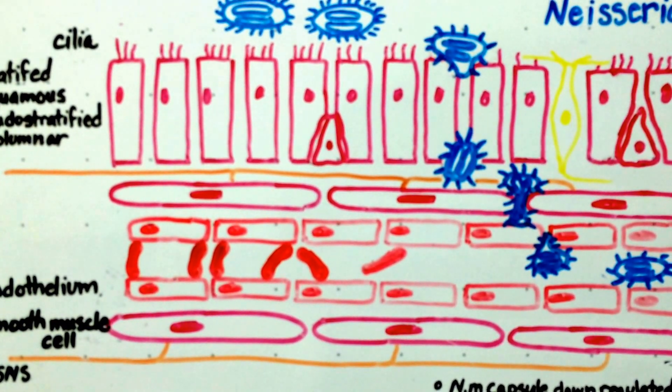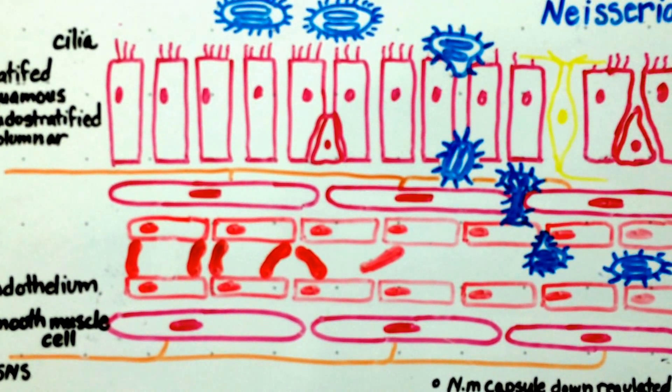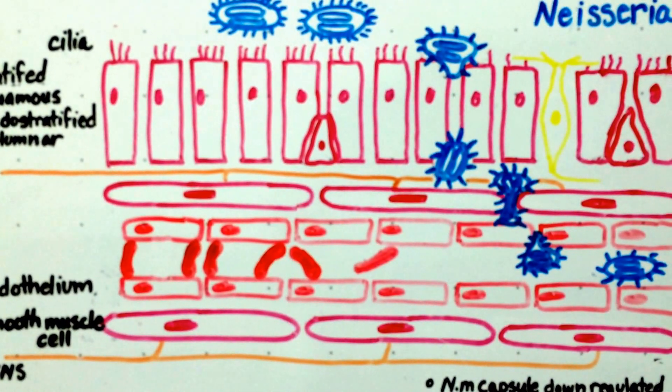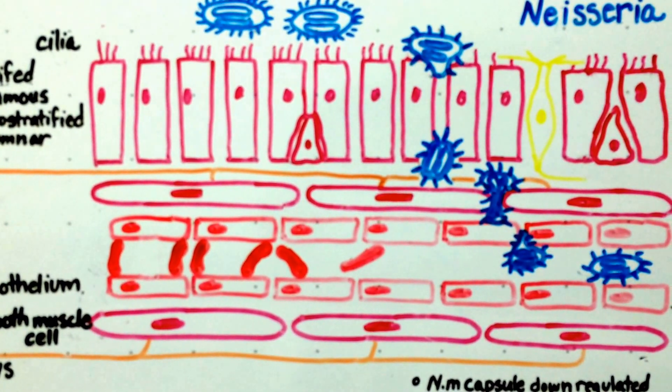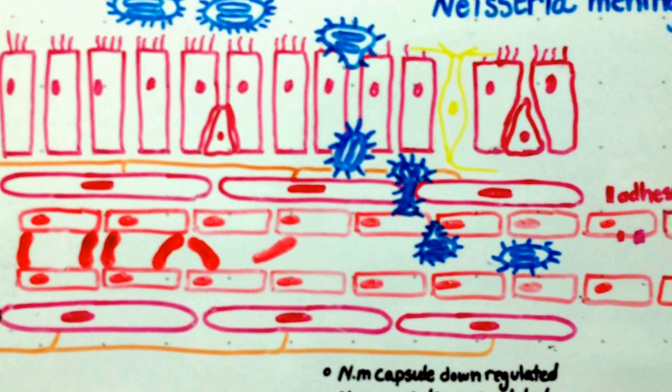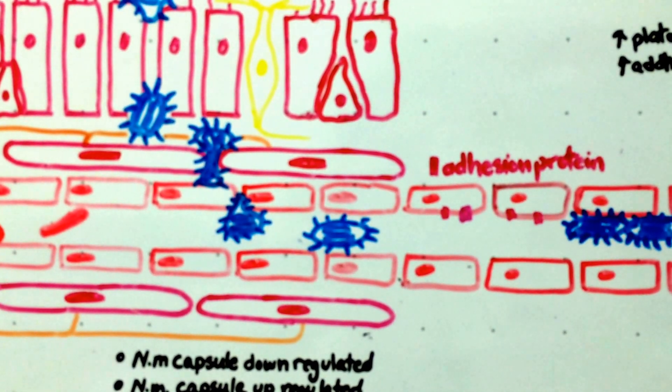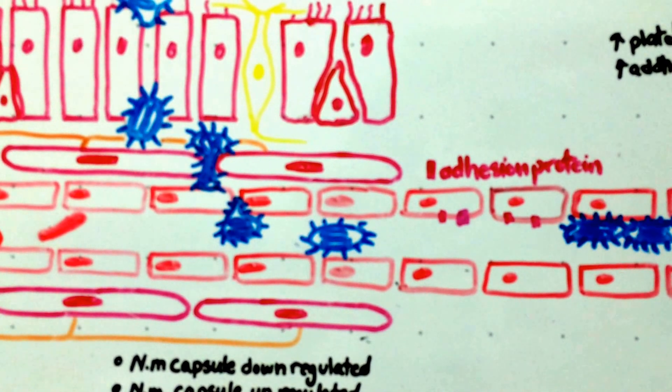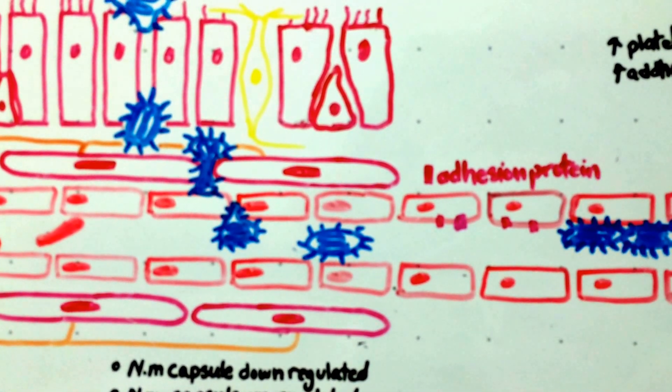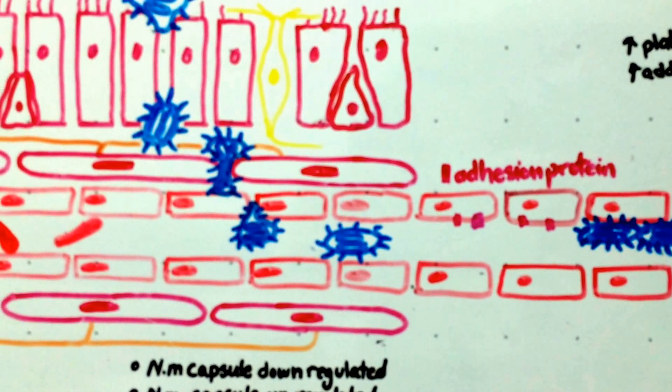So it's able to attach its pili, downregulate its capsule, and move through the cells through a process similar to diapedesis. You can see the smooth muscle in the endothelium into the blood vessel. Within the blood vessel, the bacteria upregulates its capsule to protect it from the host immune system.